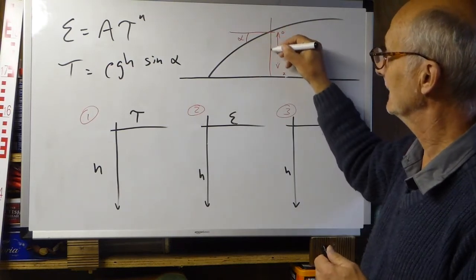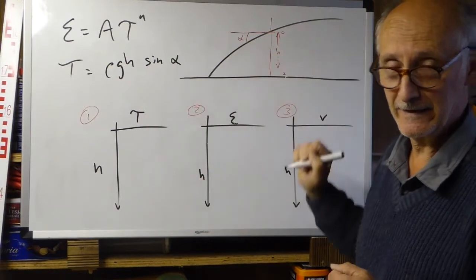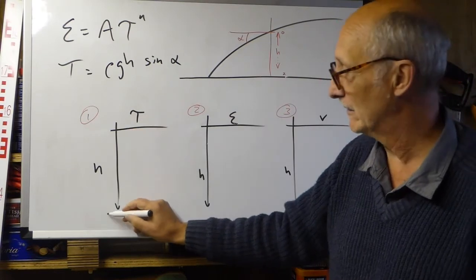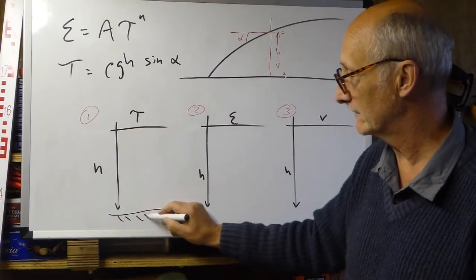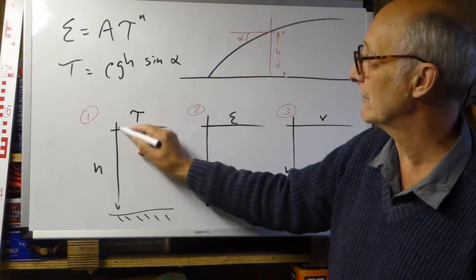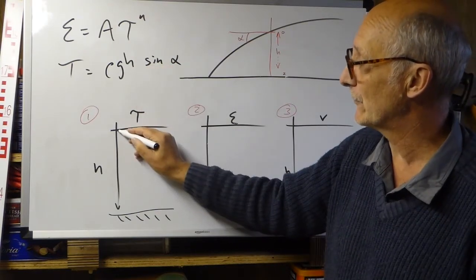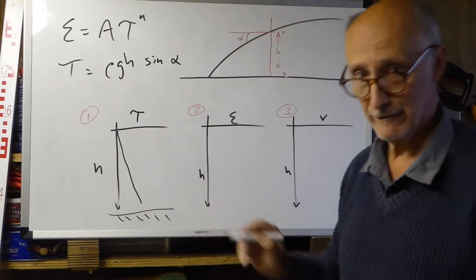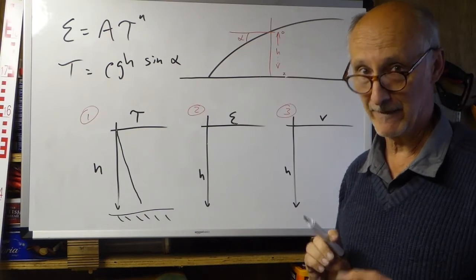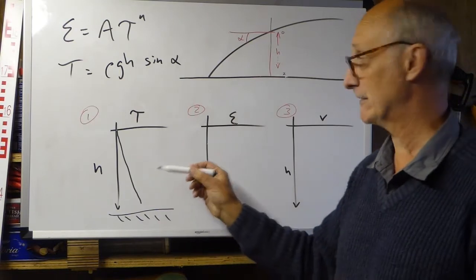As we move progressively down through our glacier, h is progressively and steadily increasing. So as we work our way down from the surface into the depths of the glacier all the way to the bed, tau will increase steadily from zero at the surface — where h equals zero — and as you progress down the glacier, it will increase as a straight line in a linear fashion with depth. That's the vertical shear stress profile.